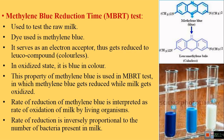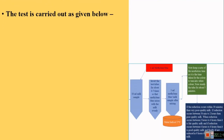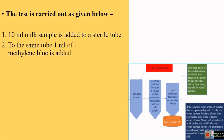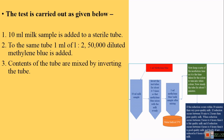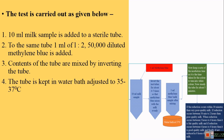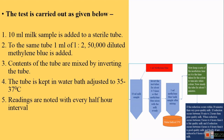In the actual MBRT test, 10 ml of milk sample is taken in a test tube. To that, 1 ml of 1:25,000 diluted methylene blue is added. The contents are mixed by inverting the tube, which is then kept in a water bath adjusted to 35–37°C. Readings are noted after every half-hour interval, and the milk is graded as per the table.